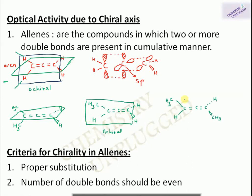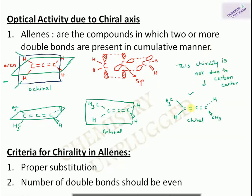If we place one methyl group on one end and another on the other end with different substituents, we cannot divide this allene into equal halves. The vertical plane containing hydrogen and methyl cannot divide it into two equal halves, meaning it has no plane of symmetry — it is chiral or optically active. Notably, this chirality is not due to a chiral carbon center but due to the lack of symmetry.